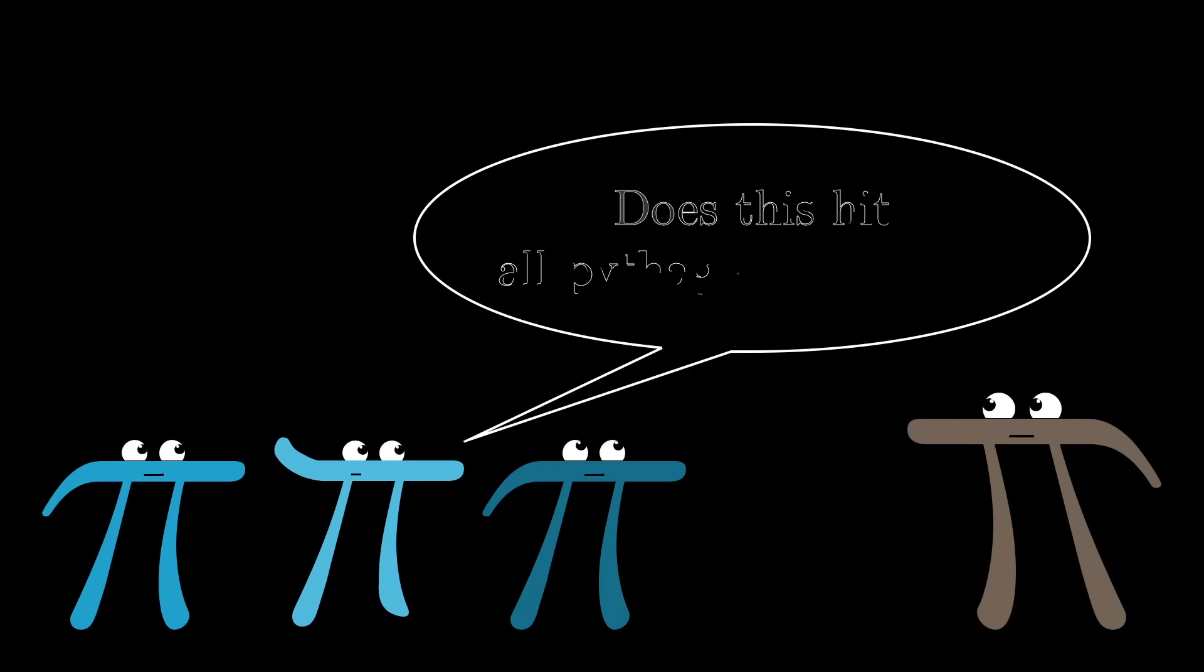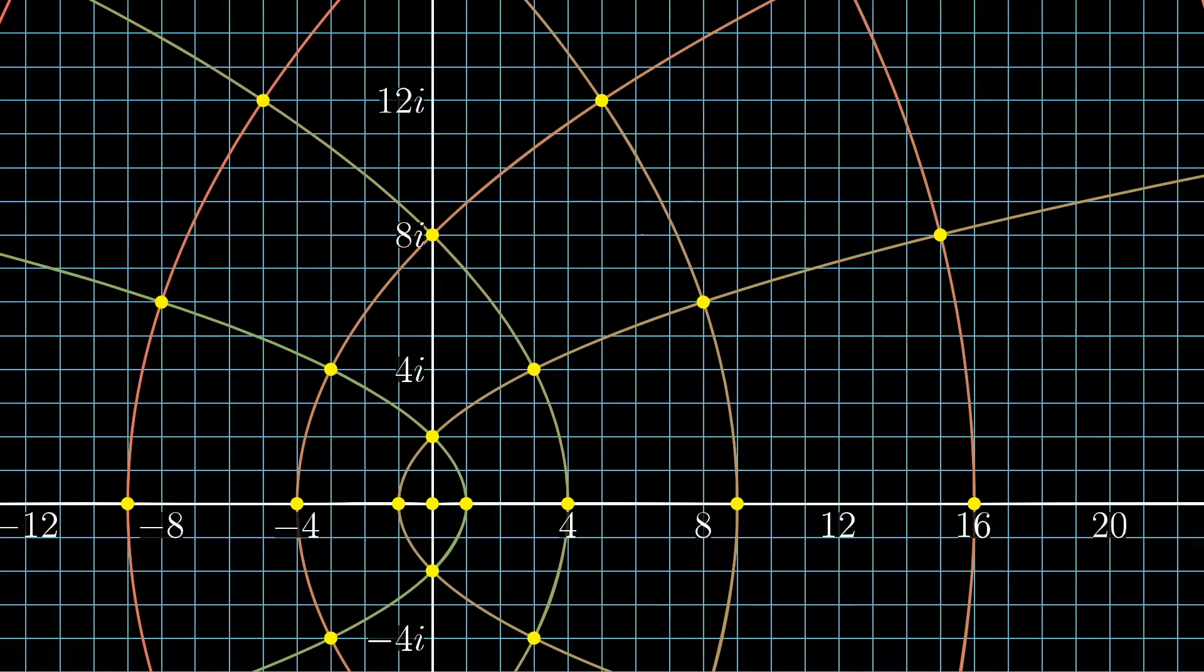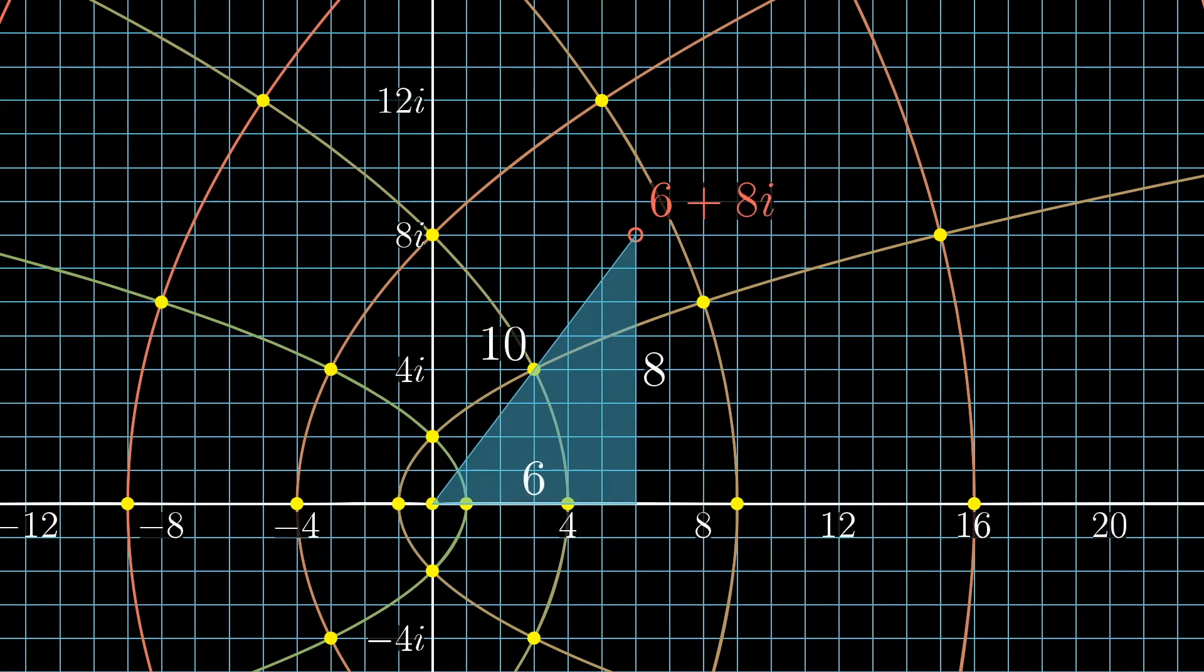Now you might ask if this accounts for every possible Pythagorean triple. Sadly, it does not. For example, you will never get the point 6 plus 8i using this method, even though 6, 8, 10 is a perfectly valid Pythagorean triple.